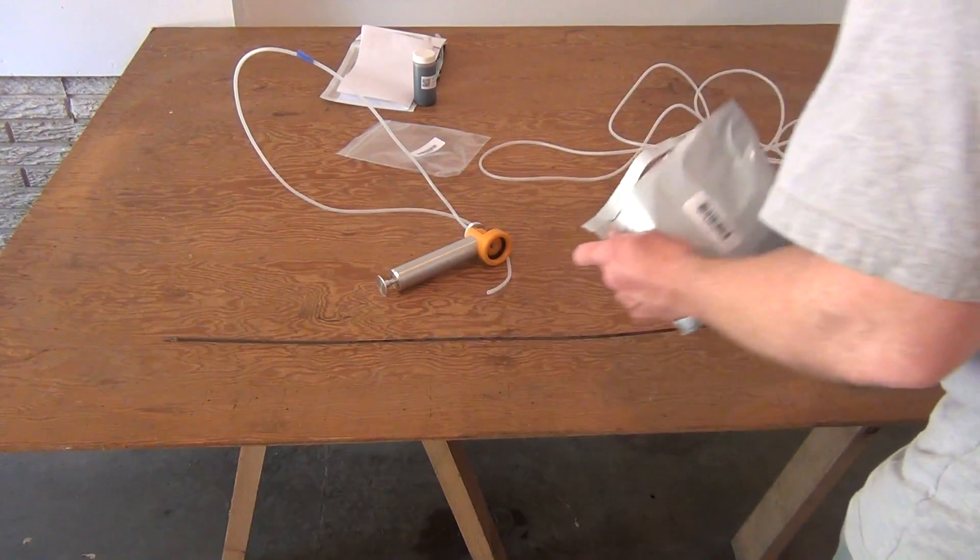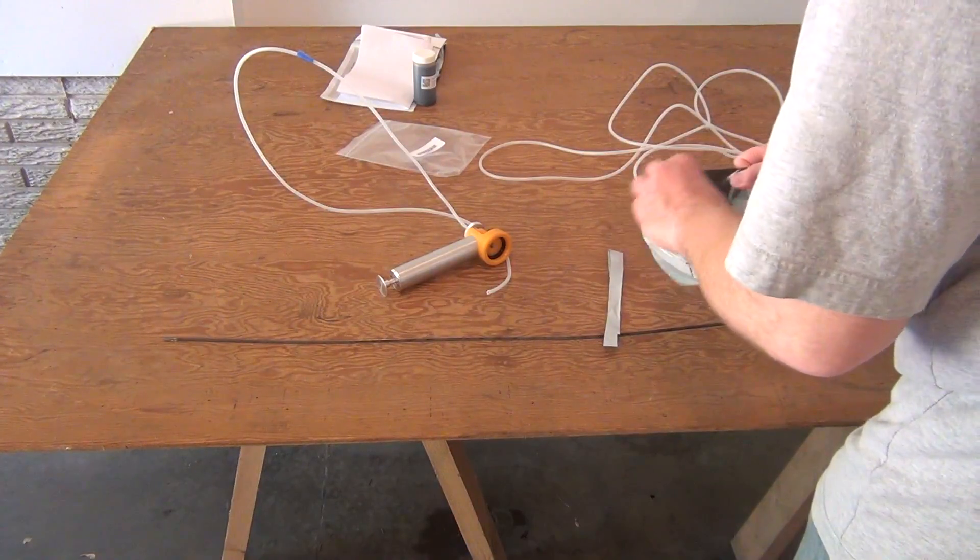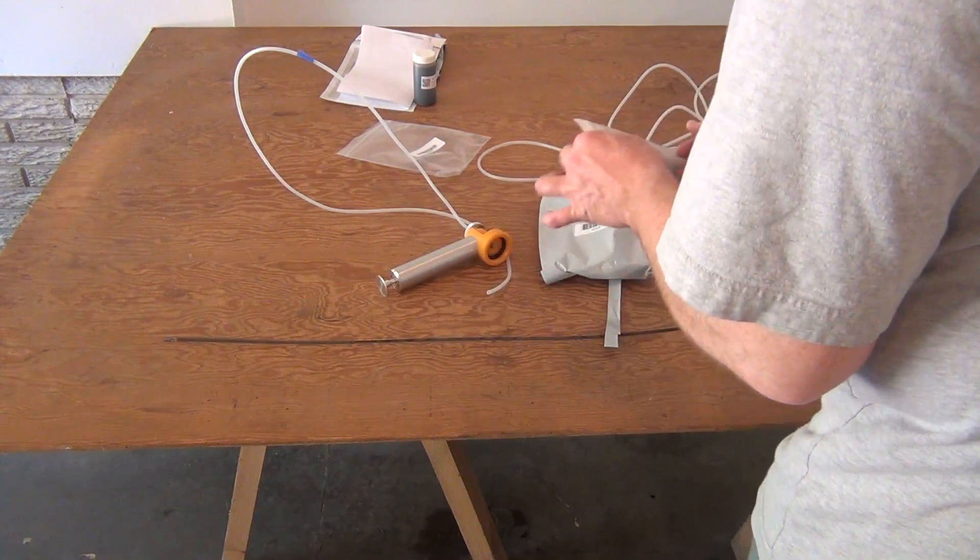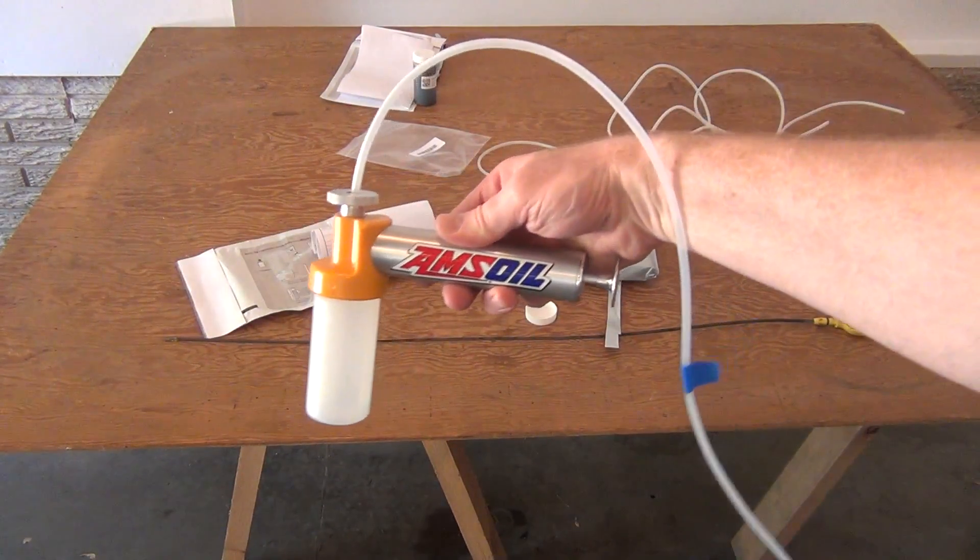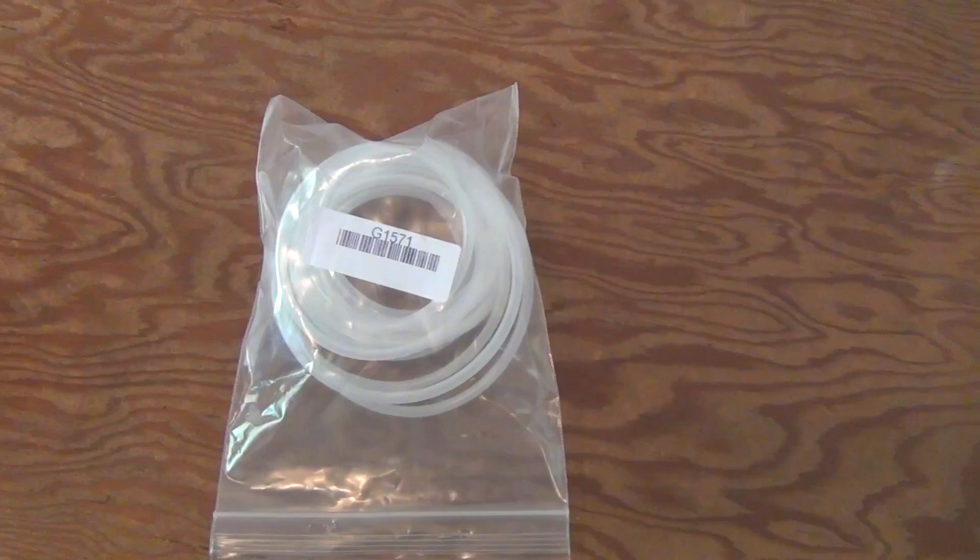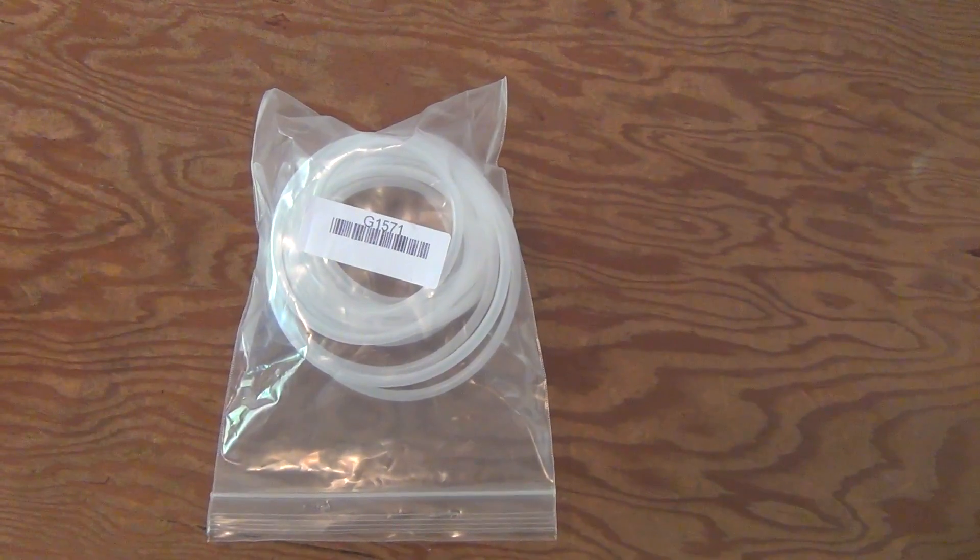Before you begin, make sure you have all the tools and materials needed. The oil analysis kit includes a bottle and the related forms and supplies to return it to the lab. You need a hand-operated vacuum pump and clean tubing to extract the sample.